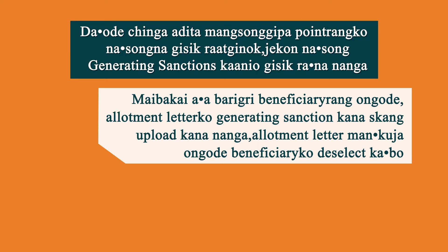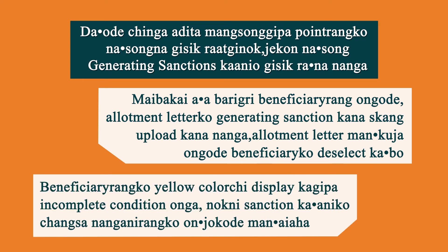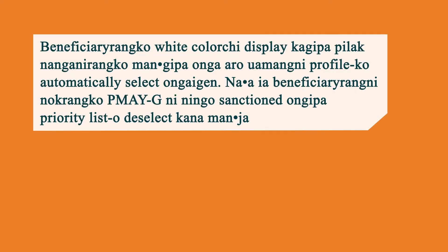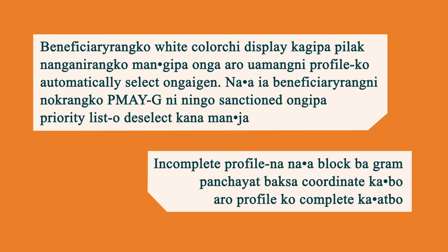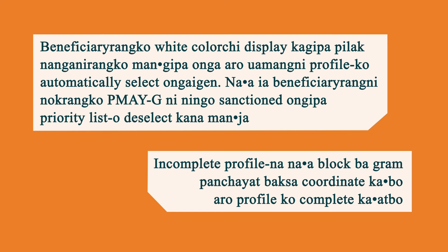The beneficiary will be available to the allotment letter for generating sanctions. The beneficiary will be selected in complete conditions, and the profile will be automatically selected. You can also select the PMAYG priority list, coordinate the profile, and complete the profile. In this generating complete process, we will see you in the next video. Goodbye.